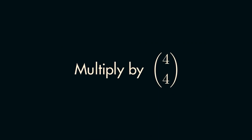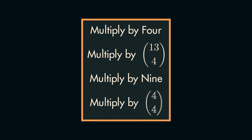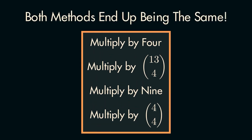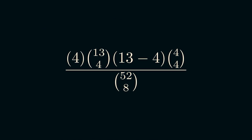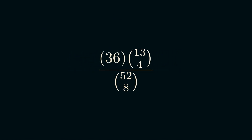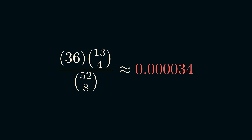The astute among you might notice this walkthrough chose the same-suit cards first, and reasonably ask if our answer would differ if we picked the same-type cards first. Working through the numbers, we actually get the exact same count, despite multiplying by different numbers. The intuitive reason is simply that we don't care about the order the cards are chosen, so changing which cards we choose first will not impact our results. Putting our numerator over the denominator of 52 choose 8, we find that the probability of winning the first round of this game is approximately 0.000034.